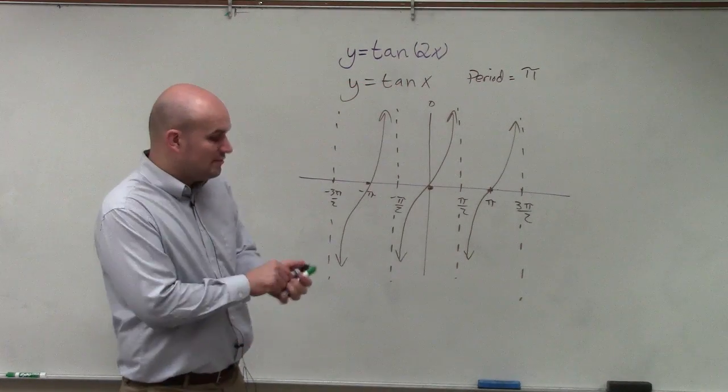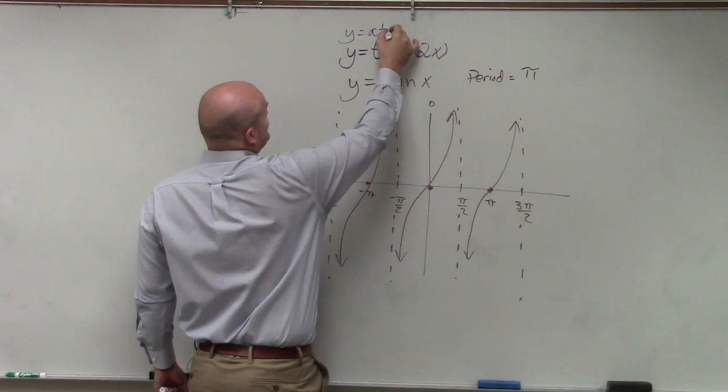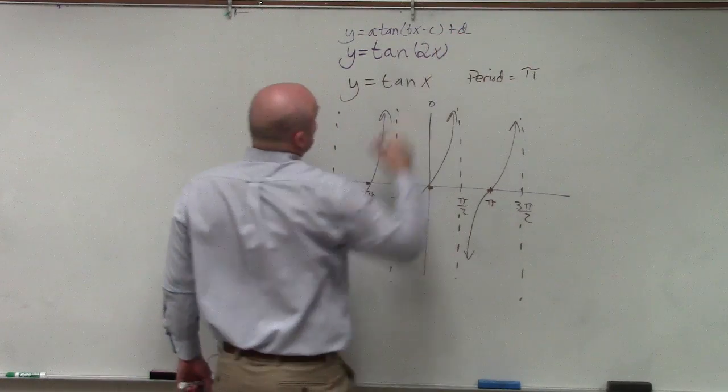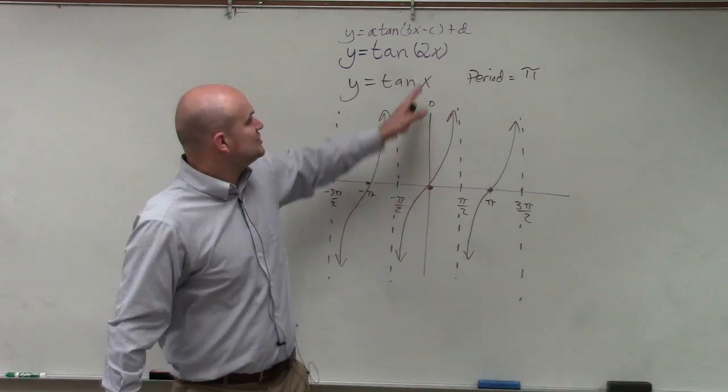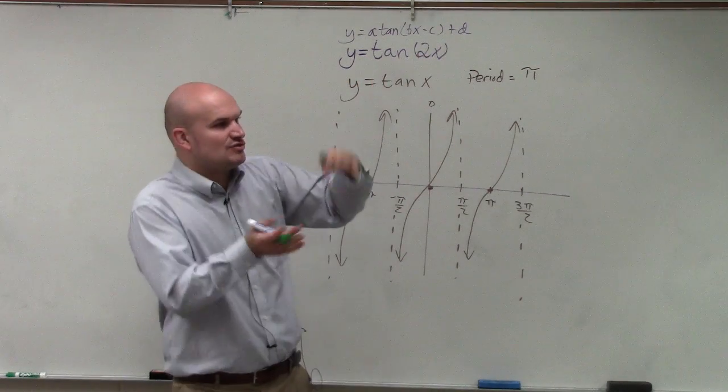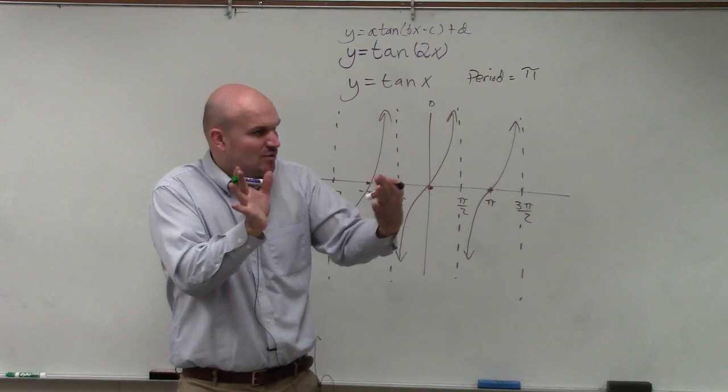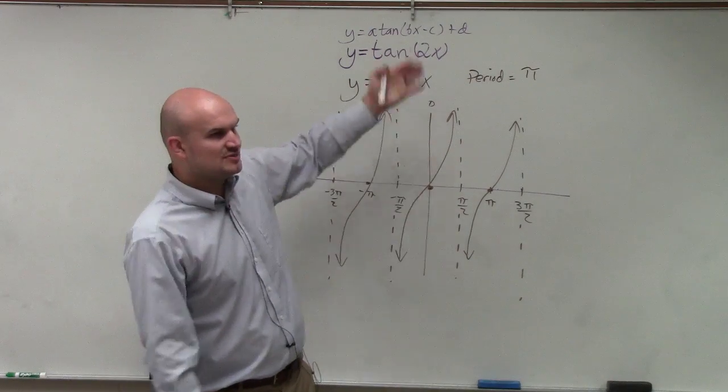However, they're asking us to do tan of x. So if you remember our transformation function, y equals a times tangent of bx minus c plus d. Rather than going through all this information, the only thing that really has changed, we know that there's no change in our stretching or compressing. There is no amplitude. But remember, a was like the same thing as quadratic—it just stretches, compresses, or reflects. There's no a, so we know it's the same.